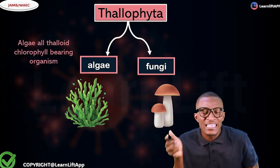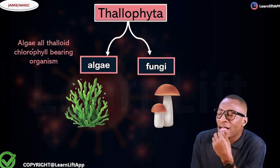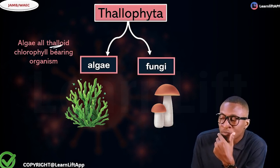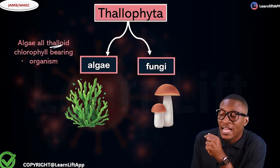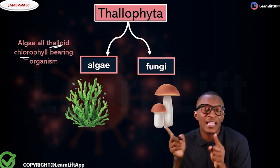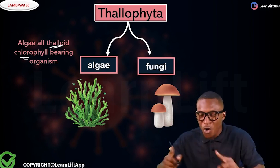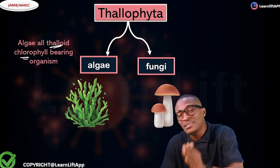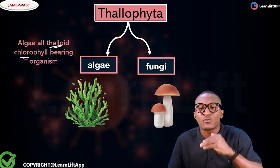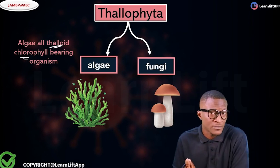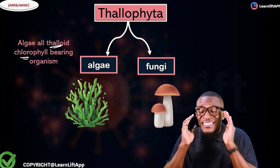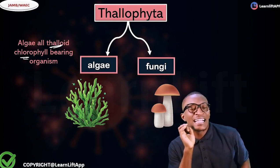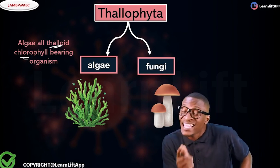What are algae? Algae are all thalloid chlorophyll-bearing organisms. They are thalloid — they don't have true roots and stem — but they are chlorophyll-bearing thalloids. So algae are thalloid chlorophyll-bearing organisms. Understanding this thoroughly will serve you well in any exam.